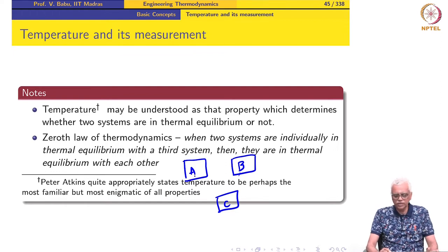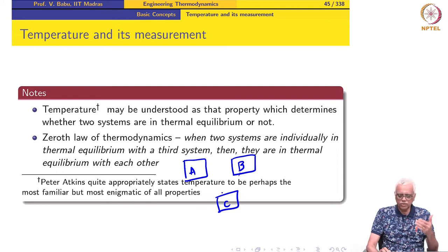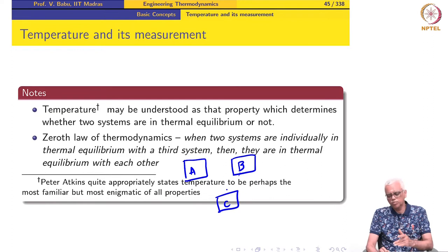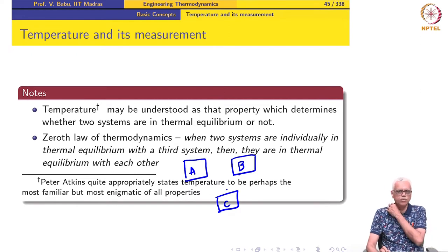We could also measure the electrical resistance of each block and notice that it keeps changing as the blocks move toward equilibrium; once equilibrium is reached, the values no longer change. That is how we define thermal equilibrium, and the property used for this is called the thermometric property — a property that will eventually be used to measure the temperature of the system.